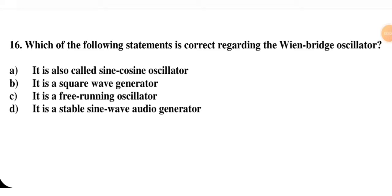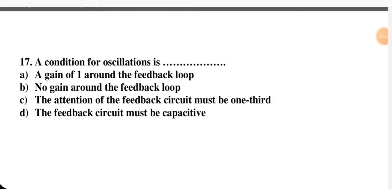Which of the following statements is correct regarding the Wien bridge oscillator — it is also called a sine-cosine oscillator, it is a square wave generator, it is a free-running oscillator, or it is a stable sine wave audio generator? The Wien bridge oscillator is a stable sine wave audio generator, and that is why it is used in experimental work. So option D is correct.